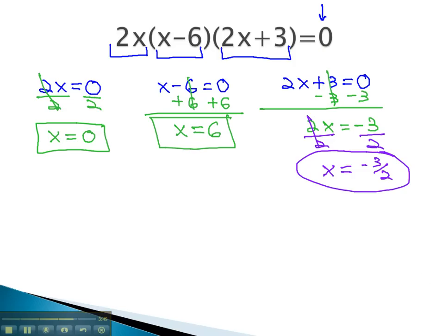The zero product rule simply says if several factors multiplied equal 0, either one of them or another will equal 0. Using this, we can find possible solutions for x.